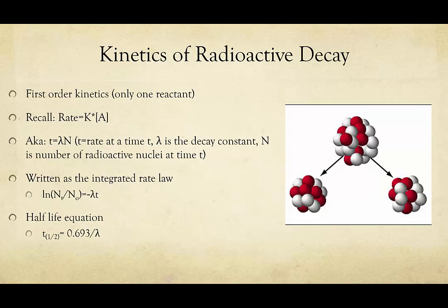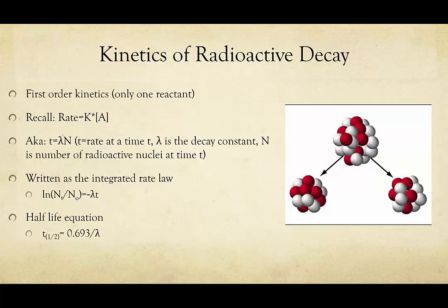First-order kinetics has only one reactant. You should refer back to earlier chapters if you are having problems with this. But recall that for first-order kinetics, your rate is equal to k times the concentration of A. In nuclear kinetics, you'll sometimes see this written as A equals λN, where A is the rate at a certain time, lambda is the decay constant, and N is the number of radioactive nuclei at that time. It's effectively the same equation, just written a little differently. Mostly, I'll continue to use the normal first-order kinetics equation.